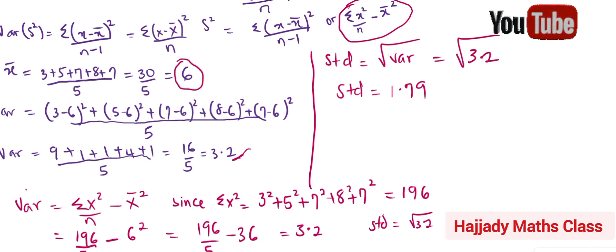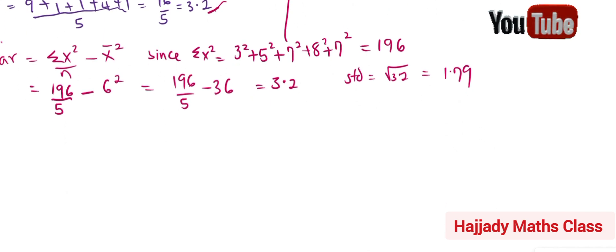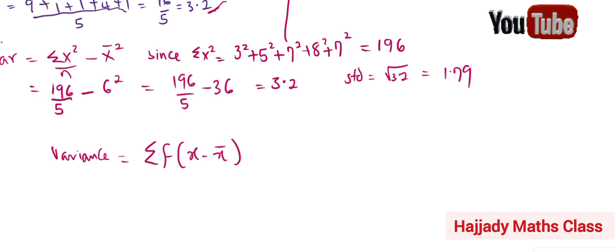This covers the standard deviation and variance for ungrouped data. This can also be extended to when you have frequencies. The variance when frequency is involved is: summation of f(x minus x̄)² all over summation f. Instead of using n, we use summation f in both places.